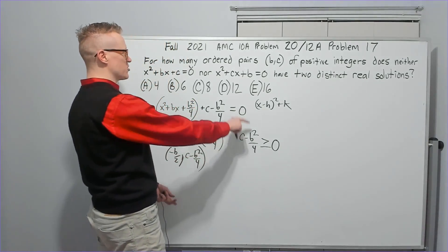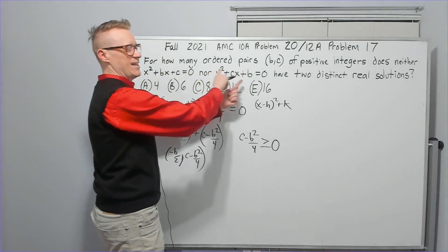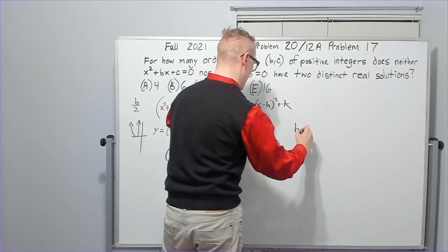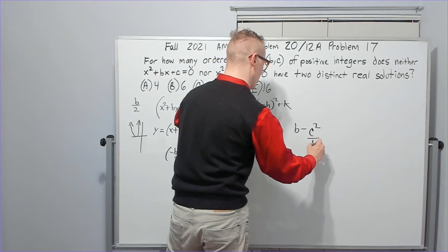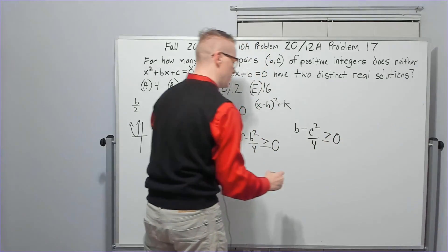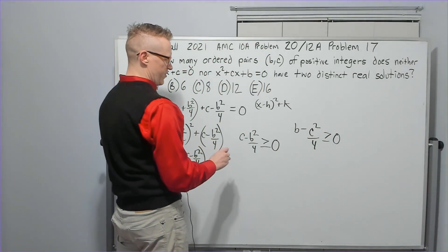Okay, so then what? Not only does this have to be true, but notice all they did was switch the b and c. So it must also be true that b minus c squared over 4 must also be greater than 0.